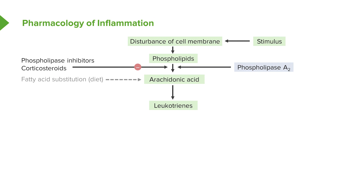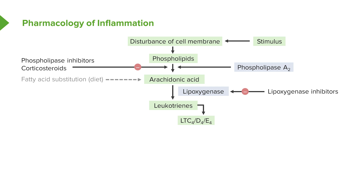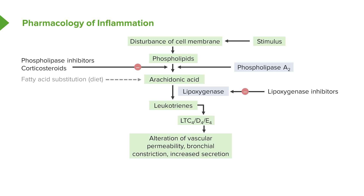From arachidonic acid, we develop leukotrienes. A leukotriene is a complex molecule broken down from arachidonic acid by lipoxygenases. To stop that process, we can use lipoxygenase inhibitors. Leukotrienes have many subtypes with alphanumeric designations. The most important idea is to recognize that arachidonic acid forms leukotrienes. These leukotrienes alter the way blood vessels work — they alter vascular permeability, they work in lung bronchi and alter bronchial constriction.